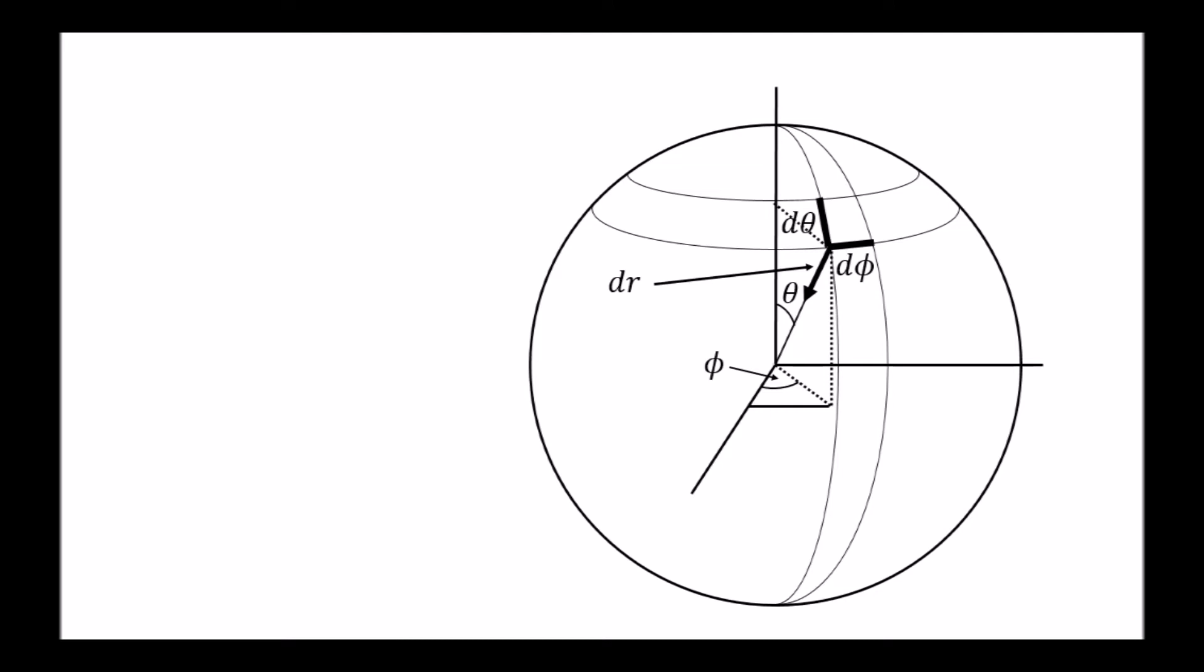Here, too, we make the assumption that the only spatial dimension affected by the presence of the mass is along the radial direction, while the other two directions, perpendicular to it, are unaffected.